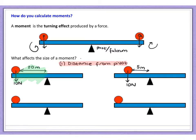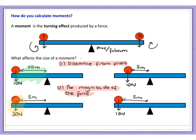Now let's look at the second diagram. In this case, both objects are exactly the same distance - 5 metres - from the pivot. The object on the left has a weight of 50 newtons, and the object on the right has a weight of 10 newtons. In which situation would you get a greater turning effect? The answer is the heavier object - the greater the force, the greater the moment. So both the magnitude of the force and the distance from the pivot are the two factors that allow us to calculate the size of a moment.